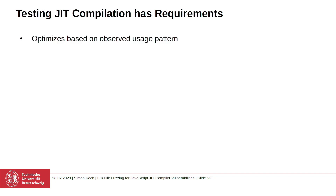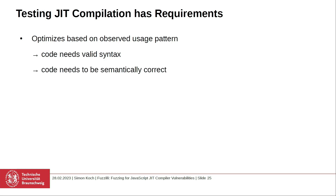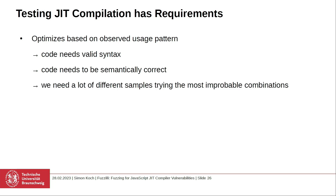There are some requirements. Optimization is based on observed usage patterns, and this implies that code needs valid syntax. If you don't have valid syntax, the interpreter will just stop and you won't have any usage patterns to observe. Next, the code has to be semantically correct — if it isn't, it will just crash and the just-in-time compilation will most likely not trigger. Furthermore, we will probably need a lot of different samples trying the most improbable combinations. JIT compilation is complex, but the developers are smart. They will have thought about most side cases, and to catch the issues still inside the engine, we need to try very improbable combinations that were missed during the implementation process.